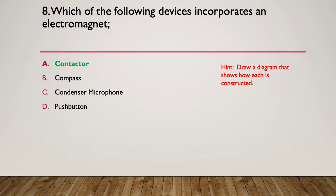Our answer is a contactor. A contactor is a coil with an electromagnet. We normally have an electromagnet of some kind with coils around it, and that electromagnet is connected to a series of contacts. It's connected to the plunger. When you energize the coil, it will close the contacts. When you de-energize it, it will open the contacts. A compass uses a fixed magnet. A condenser microphone uses a fixed magnet. And a push button doesn't have any magnets in it whatsoever.